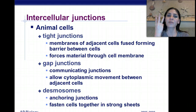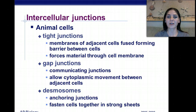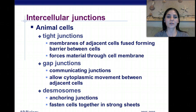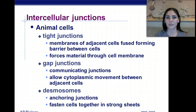Animal cells have three types of junctions. We have tight junctions, where membranes of adjacent cells fuse together, forming a barrier between the cells and forcing material through the cell membrane. We have gap junctions, which are communicating junctions that allow cytoplasmic movement between adjacent cells. We also have desmosomes, which are anchoring junctions that fasten cells together in strong sheets.